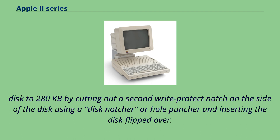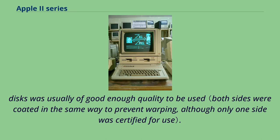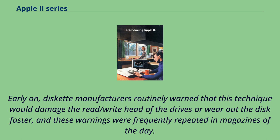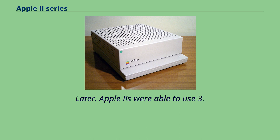Early on, diskette manufacturers warned that flipping disks would damage the read/write head or wear out the disk faster, and these warnings were frequently repeated in magazines. In practice, however, this method was an inexpensive way to store twice as much data and was widely used for commercially released floppies as well. Later, Apple IIs were able to use 3.5-inch disks with a total capacity of 800 kilobytes and hard disks. DOS 3.3 did not support these drives natively; third-party software was required, and disks larger than about 400 kilobytes had to be split into multiple virtual disk volumes.